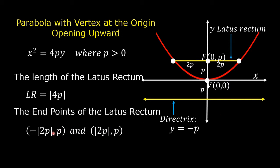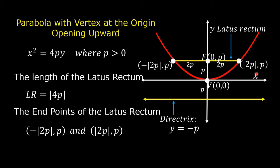These are the endpoints of the latus rectum: negative absolute value of 2p comma p, and absolute value of 2p comma p.